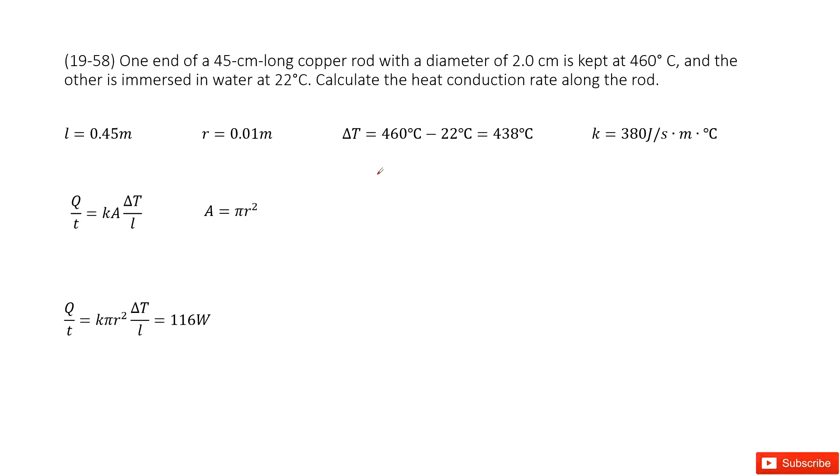Now let's write down the quantities given for this rod. First is length l = 0.45 meter and radius r = 0.01 meter. It gives us diameter 2.0 centimeter, so we can get the radius there.